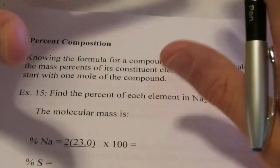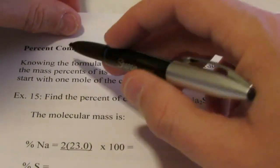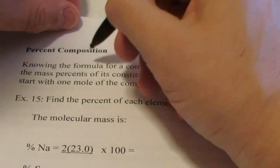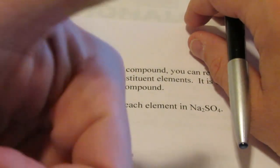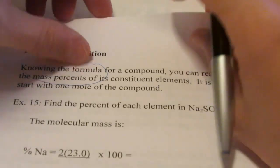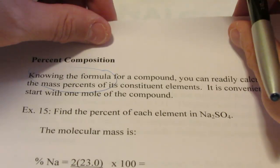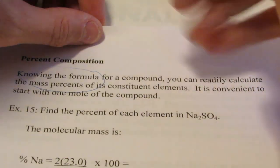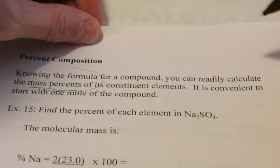Percent composition is pretty straightforward — in fact it's pretty easy. It's pretty much what it says it is: it's the percent by weight of an element in its compound. You need to know a couple of things. First, you need to know the formula for the compound. If you can't write the formula, you can't find the molecular weight of the compound and you don't know how many atoms of each element are in that compound. So you have to know how to write formulas. If you don't, go back to some previous videos on formula writing, review them, and make sure you know how to write formulas from the name of a compound. Then we're going to calculate what's called the mass percent or weight percent of its constituent elements.